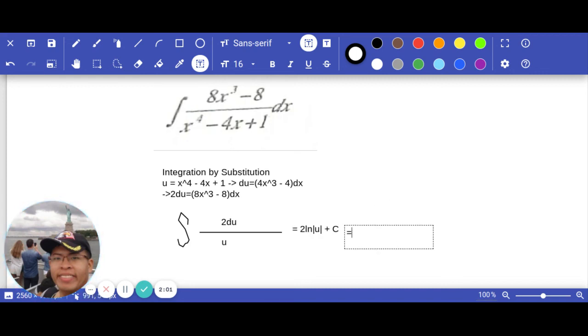For u, that should be s to the power of 4 minus 4s plus 1, plus c.